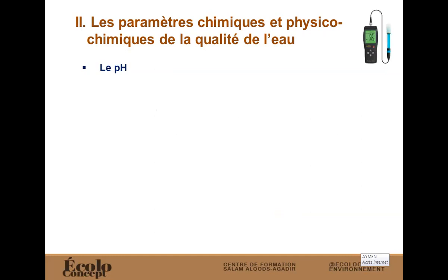Le deuxième paramètre important, c'est le pH, qui représente l'acidité de l'eau. Le pH mesure l'acidité de l'eau, c'est-à-dire la concentration en ion hydrogène H+. Cette concentration en H+ reflète le degré d'acidité de l'eau. L'acidité de l'eau joue un rôle important en ce qui concerne la qualité de vie dans le milieu aquatique.